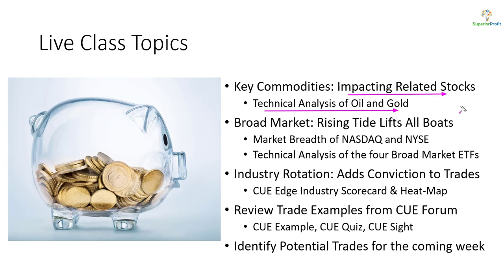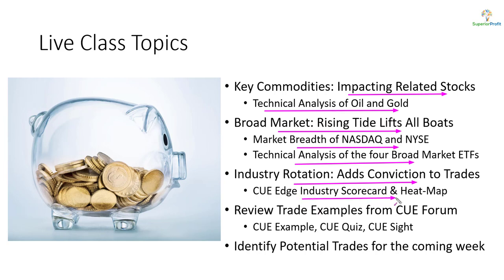As usual, we will look at oil and gold using technical analysis — they tend to impact related stocks. When swing trading stocks, we like to align them with the market's direction. We will study market strength using NASDAQ and NYSE market breadth and technical analysis of market ETFs. In addition to aligning trades with the market's direction, we like to align them with industry strength, studied using industry scorecard and heatmap. Along the way, we may look at recent trade ideas from the traders forum and look for potential trades for the coming week. That was the last slide — let's move to the live system.